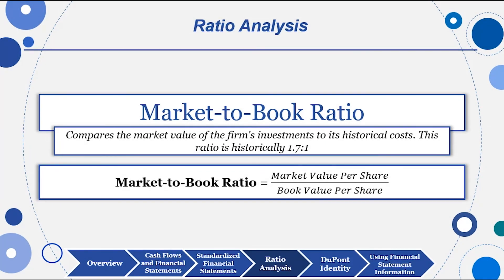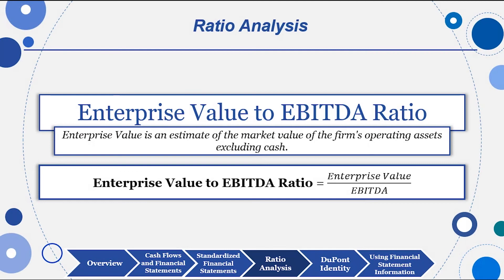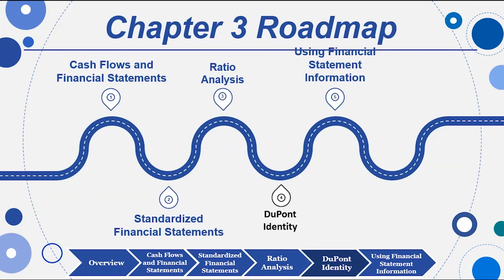The market-to-book ratio measures how the company is doing health-wise: market value per share divided by book value per share, where book value is total equity divided by shares outstanding. A higher market-to-book ratio indicates better company performance. The enterprise value to EBITDA ratio is newer: enterprise value is market cap plus debt plus preferred stock minus cash, divided by EBITDA — earnings before interest, taxes, depreciation, and amortization. This ratio is used heavily in acquisition analysis.